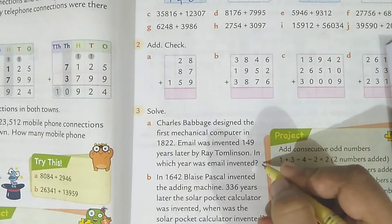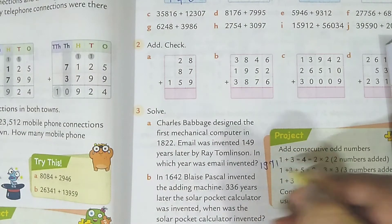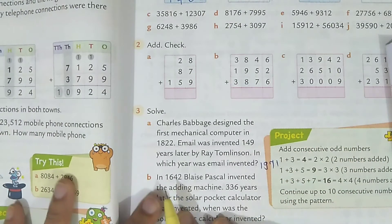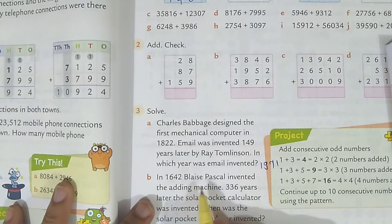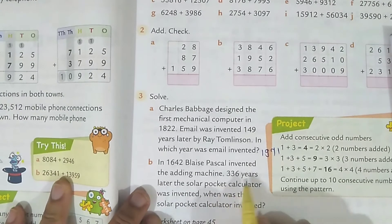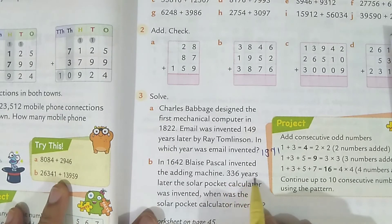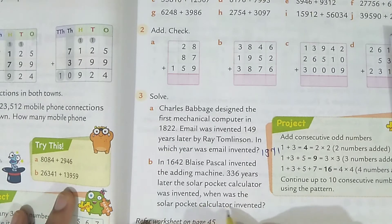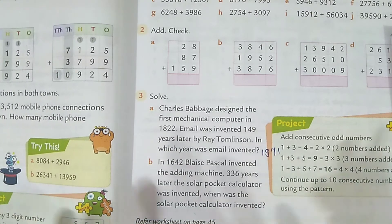This is the answer to solve. In 1642, Blaise Pascal invented the adding machine. 336 years later, the solar pocket calculator was invented. When was the solar pocket calculator invented? Same.